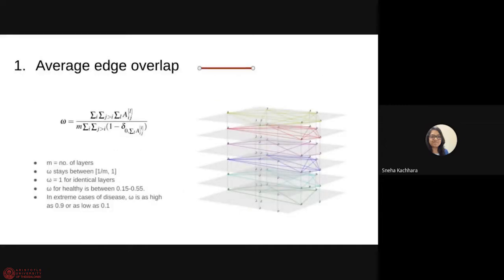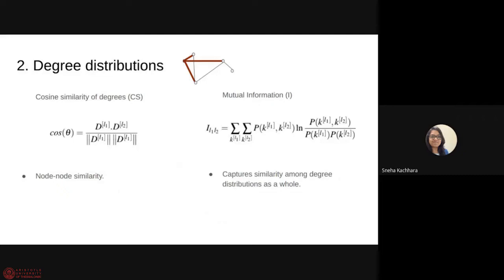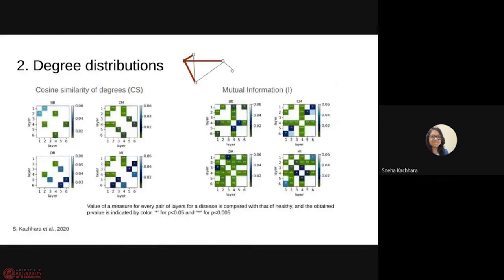For edge overlap what we found was the value for healthy people was between 0.15 to 0.55 and in extreme cases of diseases it went as high as 0.9. Now coming to the degree distributions we analyzed node to node similarity in terms of the degree and we also analyzed the similarity in terms of overall probability distributions. And what we did was we calculated this value for each subject for each pair of layer and these measures were then compared with healthy. And if they were significantly different then the corresponding matrix element was assigned a particular value of color based on the p-value. And as you can see that for cosine similarity we have discrete blocks but for mutual information you see entire rows of the layers.